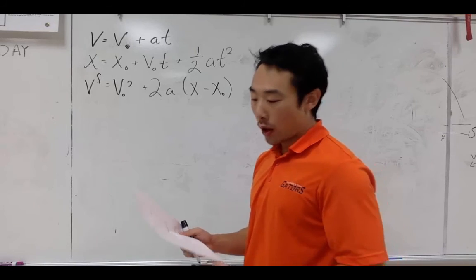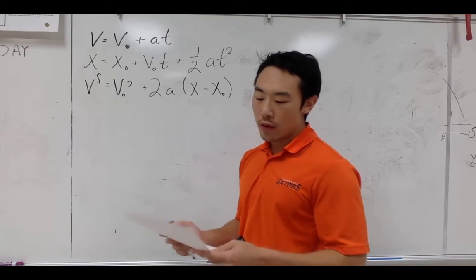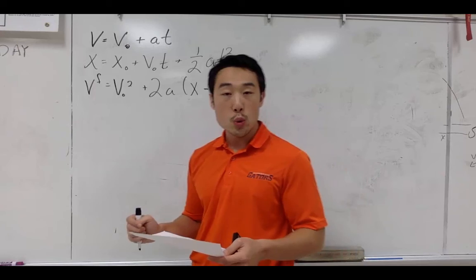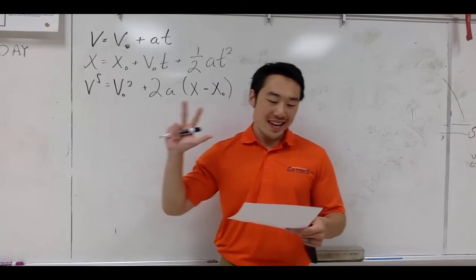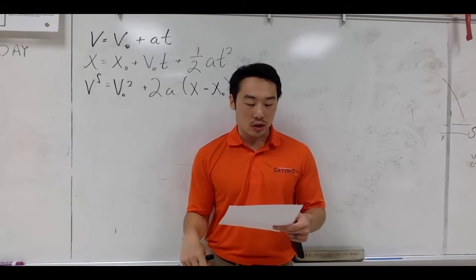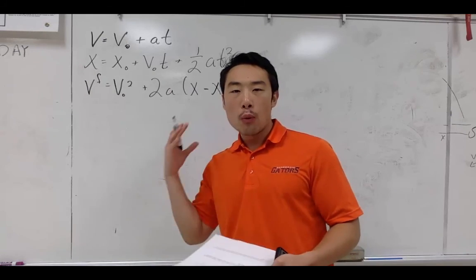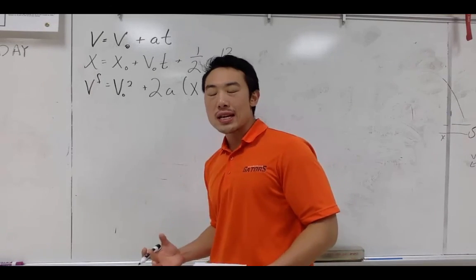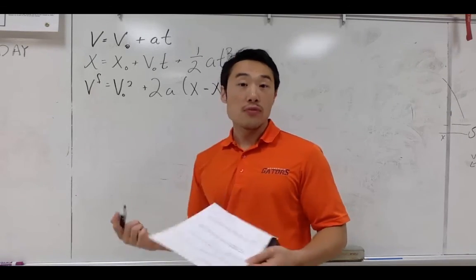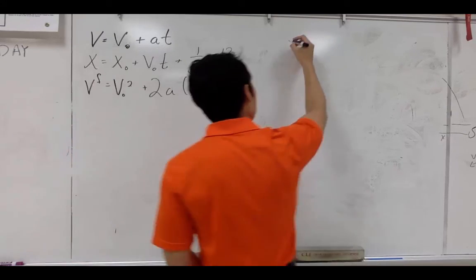Let's do question number one. Georgia is jogging with a velocity of four meters per second, which accelerates at two meters per second squared for three seconds. How fast is Georgia running now? In order to do these problems, what you have to do first is make a table of variables. I'm going to create that up here.